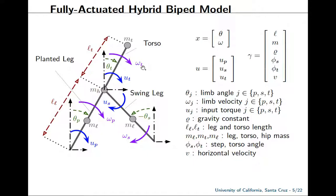Since this is a fully actuated model, we're able to apply torques that control the movement of each of the limbs. We have the input vector u, which consists of the input on the planted leg u_p, that on the swing leg u_s, and on the torso u_t. The parameters of the system include the length of the torso l_t and the length of the legs l.